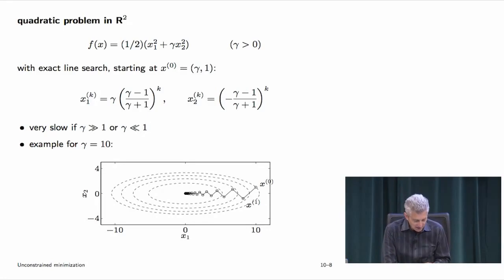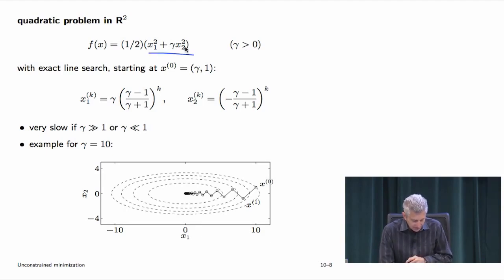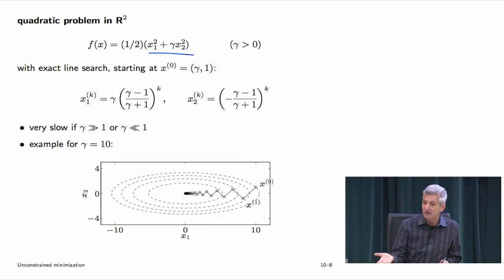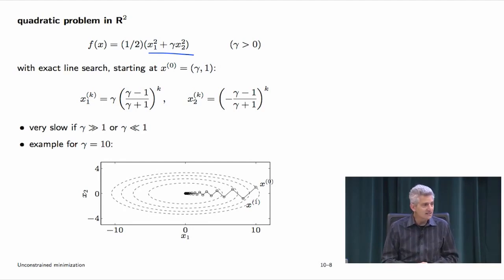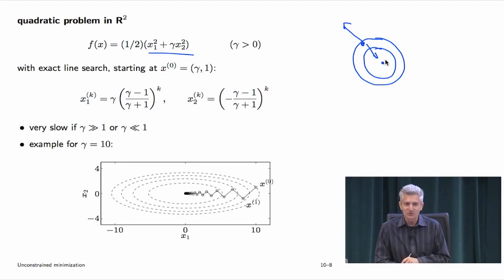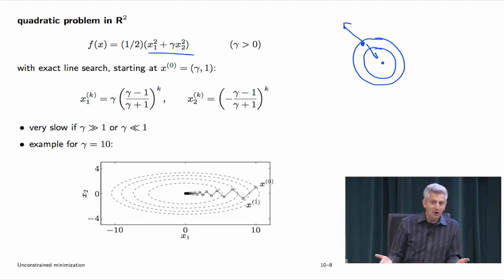Let's examine it with a quadratic problem in R² with parameter gamma controlling the condition number of the quadratic form (matrix diag(1, gamma)). If gamma = 1, the sublevel sets are round circles. The gradient points straight uphill, so the negative gradient points directly to the solution — gradient descent works superbly and converges very fast. With a backtracking line search, you halve the distance each time and get fast convergence.